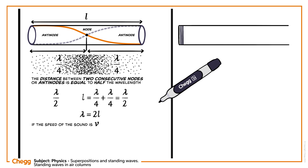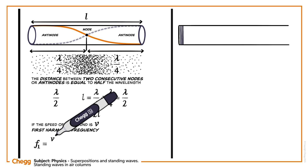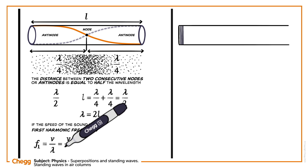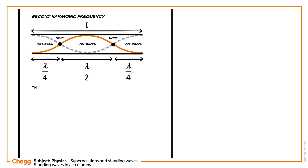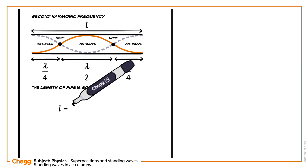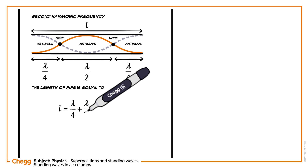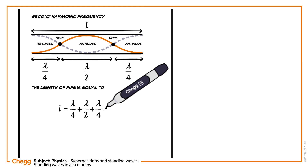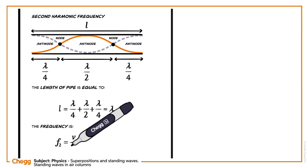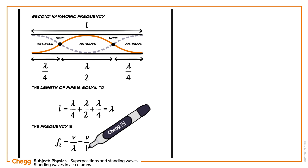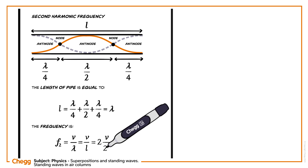If the speed of sound is v, then the first harmonic frequency is f1 equals v divided by λ, which equals v divided by 2l. Second harmonic frequency: the length of the pipe l equals λ/4 plus λ/2 plus λ/4, which equals λ. The second harmonic frequency is f2 equals v divided by λ, which equals v divided by l, which equals 2v divided by 2l.